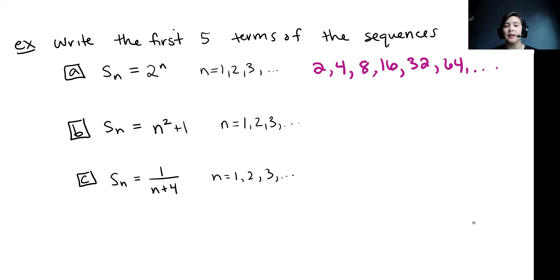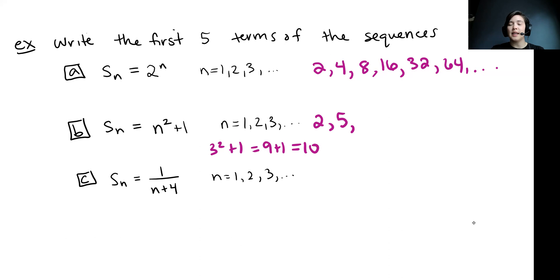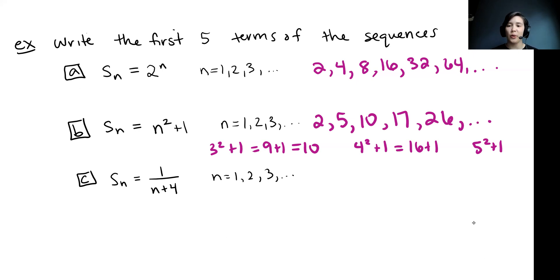Now let's go on to part B: Sn equals n squared plus 1. Starting with n equals 1, we get 1 squared plus 1 equals 2. For n equals 2, we get 2 squared plus 1, which is 4 plus 1 equals 5. Next, 3 squared plus 1 gives us 10. Then 4 squared plus 1 gives us 17. And 5 squared plus 1 gives us 26, and we could keep going like that.